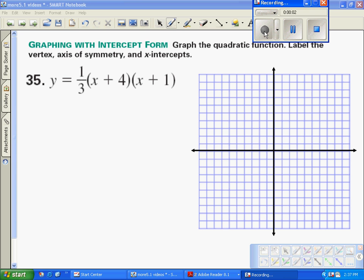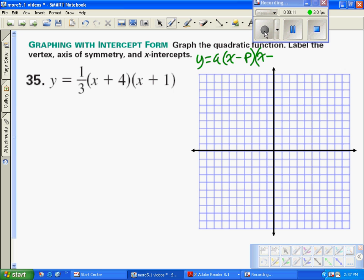Okay, we want to graph the quadratic now in vertex form. And if you remember, vertex form says y equals a times x minus p times x minus q, where p and q are the x-intercepts for this parabola.